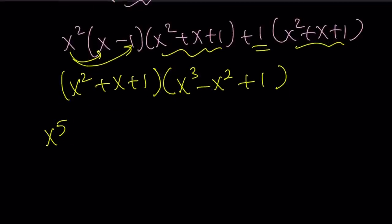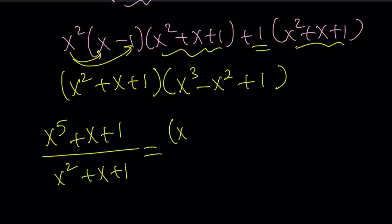So what is that supposed to mean? Let's go back to the original problem. It was x to the fifth plus x plus one divided by x squared plus x plus one. But now, I was able to factor the numerator, right, which is x to the fifth plus x plus one.